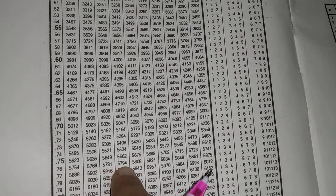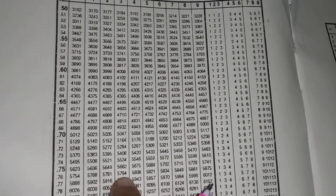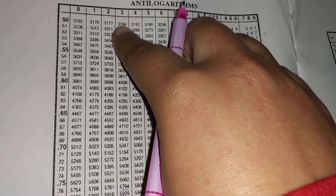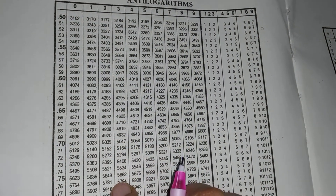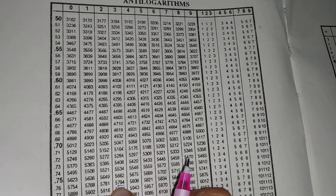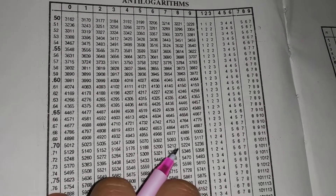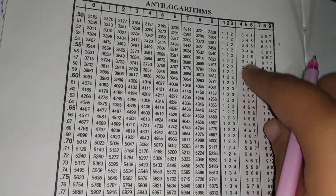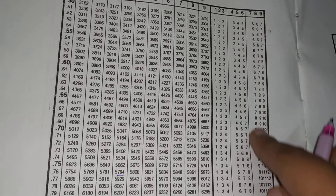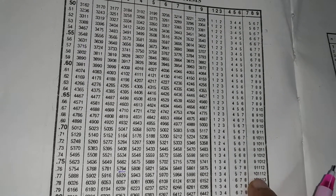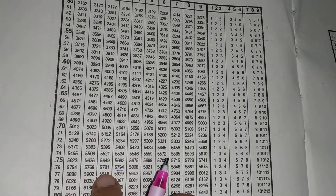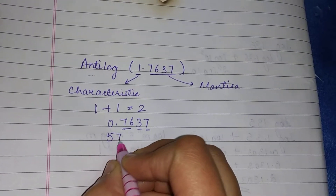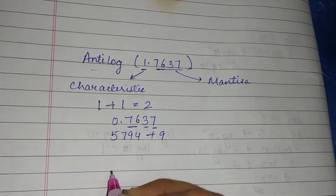In the antilog table, for 0.76 at column 3, the value is 5794. We need the value for 0.7637, so we look up 0.763 and then add the mean difference for the seventh column, which is 9.